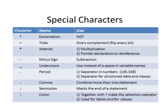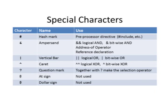The comma combines more than one statement together. The semicolon marks the end of a statement. The colon, together with the question mark, is the selection operator; it's also used for labels and classes. The hash mark is a preprocessor directive like #include. The ampersand is a logical AND, bitwise AND, address-of operator, and reference declaration. The vertical bar is for OR. The caret is a logical exclusive OR. The question mark together with the colon makes the selection operator. The at sign and the dollar sign — I haven't seen those used much.